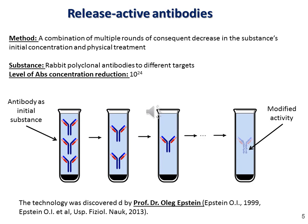One of the novel approaches is the manufacture of release active antibodies. The initial substance for them is rabbit polyclonal antibodies to different targets. The basis of this technology is the consequent decrease of the initial concentration combined with physical treatment. As a result, at the end of the dilutions we receive a technological product whose activity is associated with the activity of the initial substance, but is not the same.